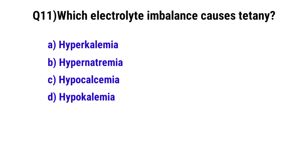Question number 11: Which electrolyte imbalance causes Chvostek's sign? The correct option is C: Hypocalcemia.